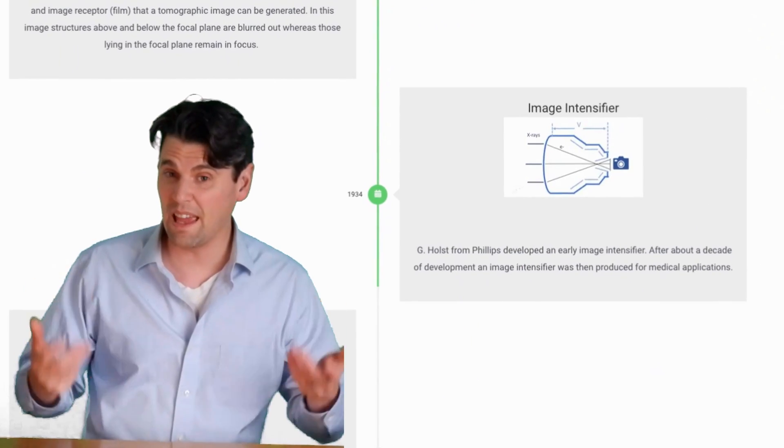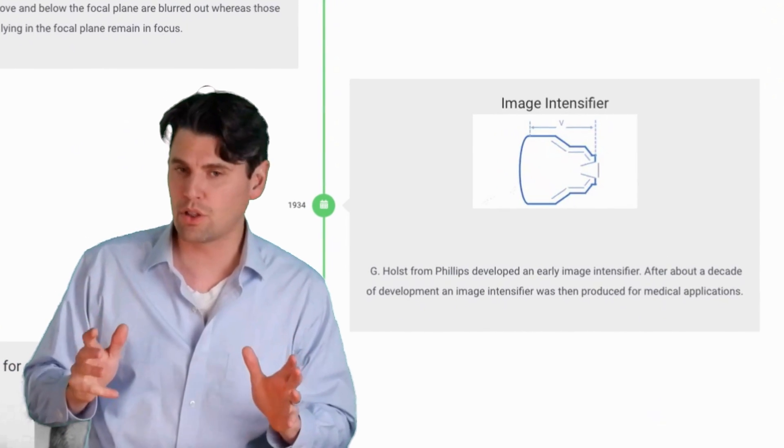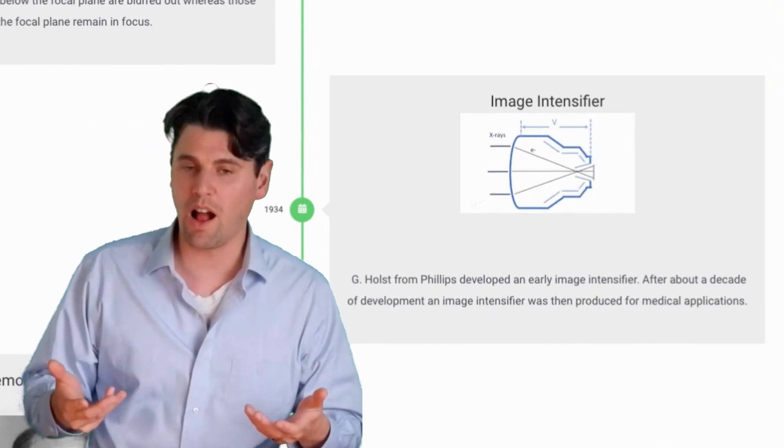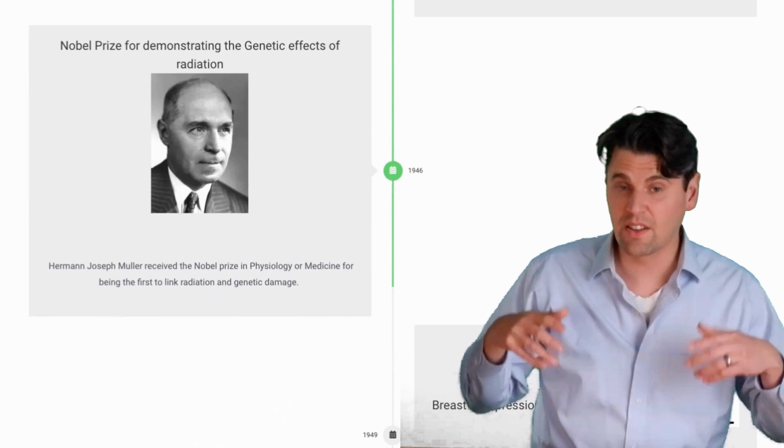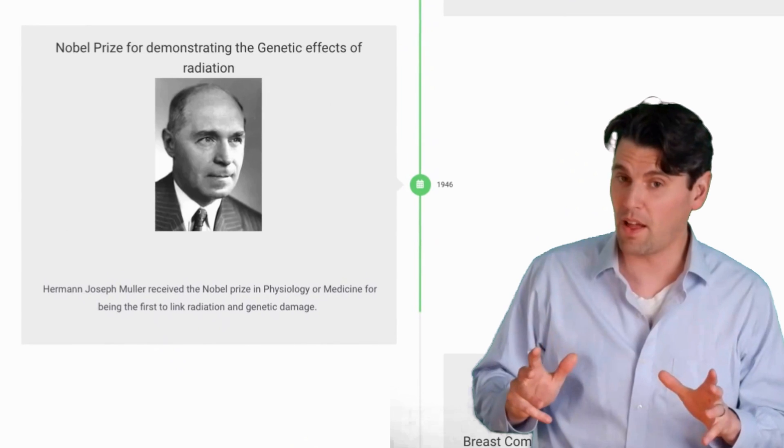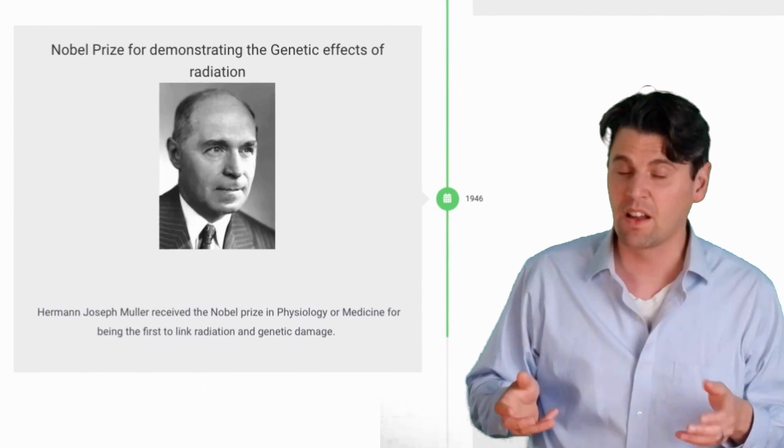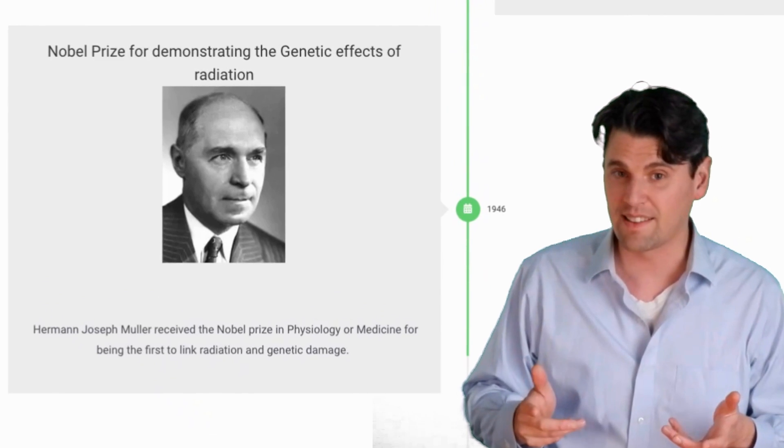In 1934, the image intensifier was invented at Philips, and this is really crucial for modern fluoroscopy. In 1946, Herbert Joseph Mueller got the Nobel Prize for that fruit fly experiment we talked about demonstrating the genetic impact of radiation on fruit flies.